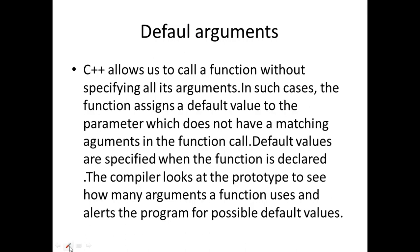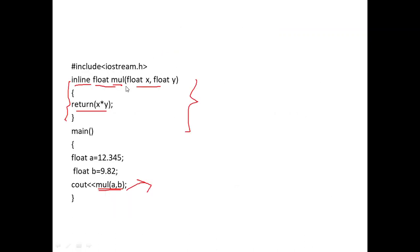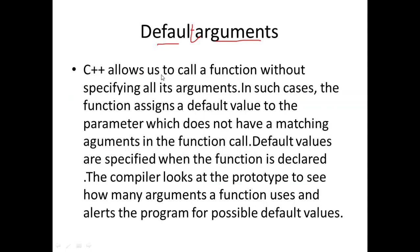Now about default arguments. 'Default' means 'as such' — that is, some values already defined. Arguments are whatever is passed inside a function's brackets. C++ has a set of default arguments: when we are not providing any values, the compiler looks at the prototype to see how many arguments a function uses and alerts the program for possible default values.